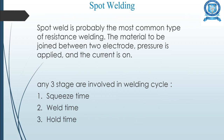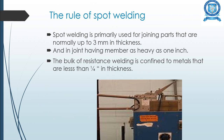Spot welding is probably the most common type of resistance welding. The material to be joined is placed between two electrodes, pressure is applied, and then the current is switched on. There are three stages in the welding cycle: the squeeze time, the weld time, and the hold time. Spot welding is primarily used for joining parts up to 3 mm in thickness, with the bulk of resistance welding confined to metals less than one-fourth inch thick.